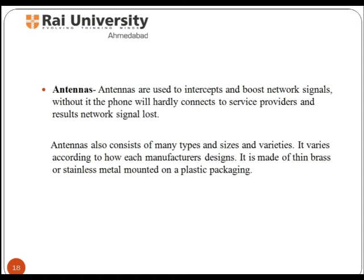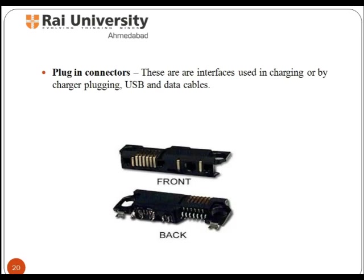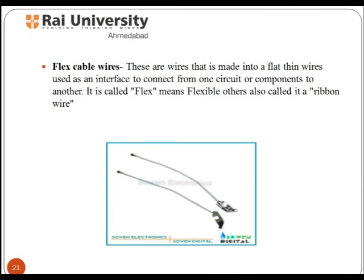Antennas are used to intercept and boost network signals. Without an antenna, the phone will hardly connect to the service provider and will experience network signal loss. They come in many types, sizes, and varieties depending on how each manufacturer designs them. They are made of thin brass or stainless metal mounted on a plastic packaging. The camera module is the component used to capture and store images. Plug-in connectors are interfaces used in charging by charger plugging. Flex cables, also called flex wire or ribbon wire, are made into flat thin wires used as an interface to connect from one circuit or component to another.